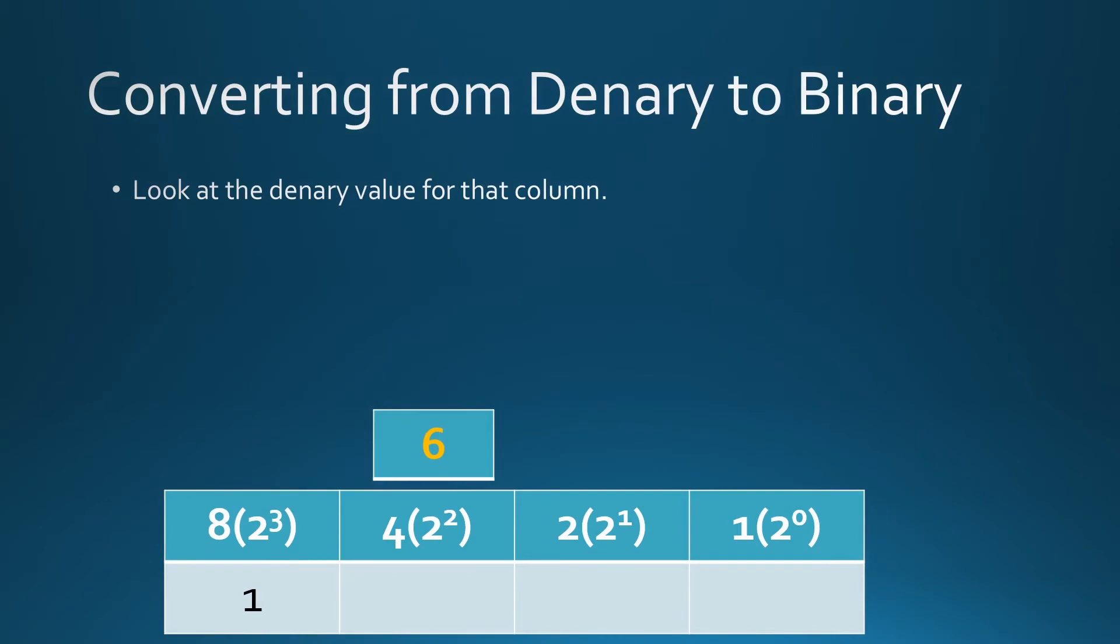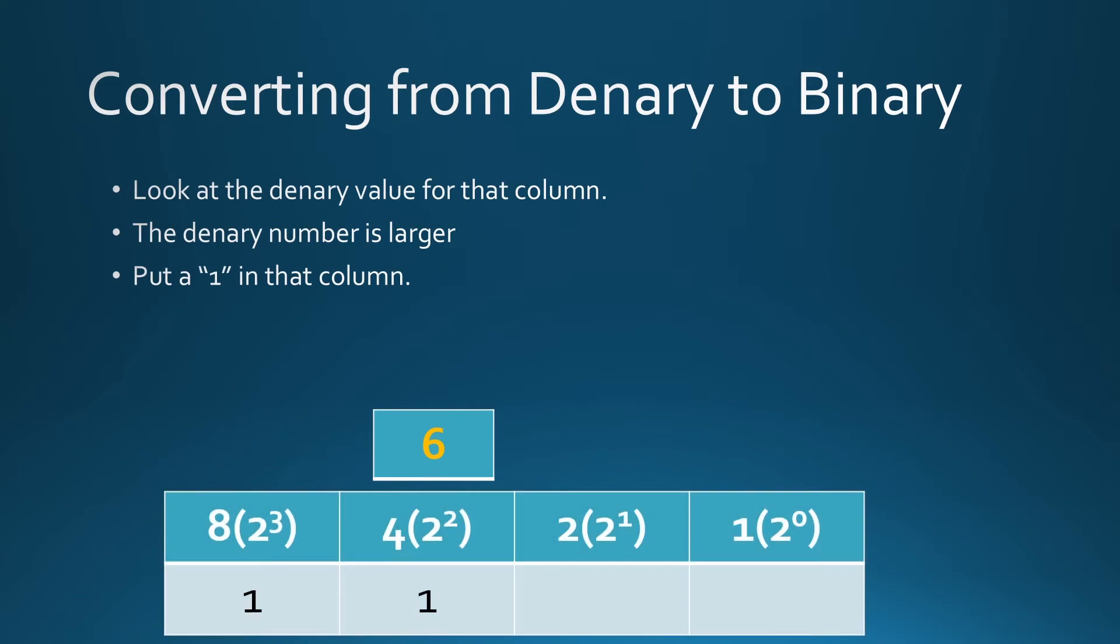Let's compare the values. Is the number larger? Yes it is. So put a 1 in the column. Take away that value of that column away from it, 6 minus 4, it's going to leave you 2. Now, what are you going to do? Move to the right.